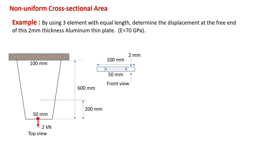Here is our problem. We have this type of plate — a non-uniform bar that is hanging. In this example, let's ignore the weight of the bar. This is the front view, meaning it has a thickness of 2mm and a rectangular cross-section. The applied load is at the end of the bar, which is 2kN.